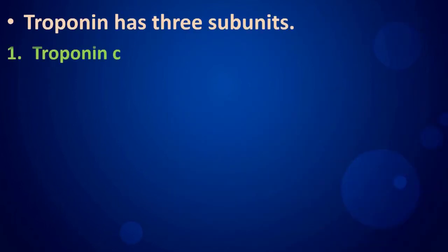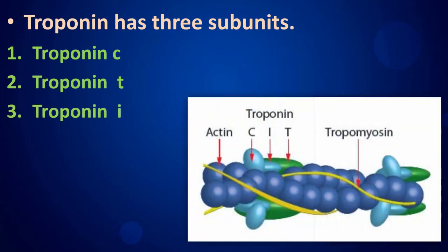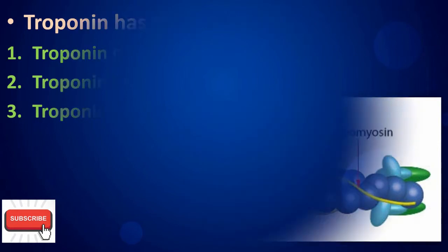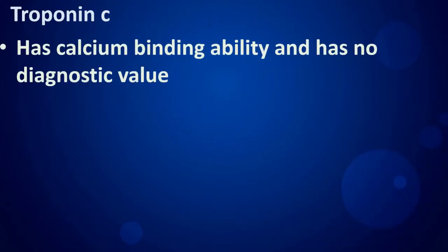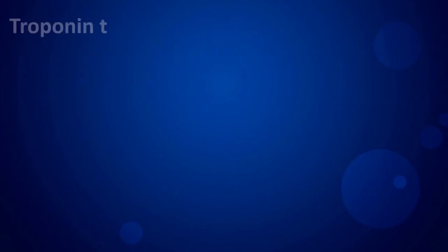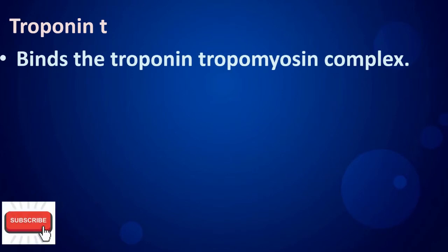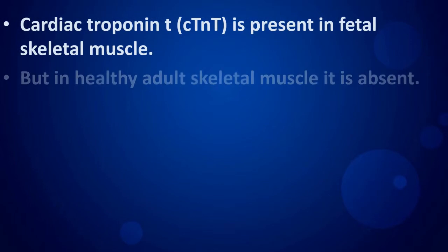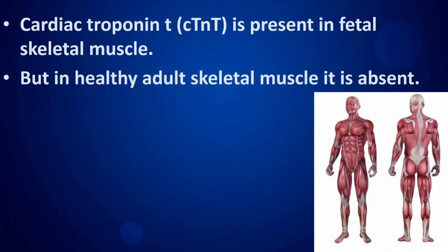Troponin has three subunits: Troponin C, Troponin T, and Troponin I. Troponin C has calcium binding ability and has no diagnostic value. Troponin T binds the troponin-tropomyosin complex. Cardiac Troponin T is present in fetal skeletal muscle, but in healthy adult skeletal muscle it is absent.